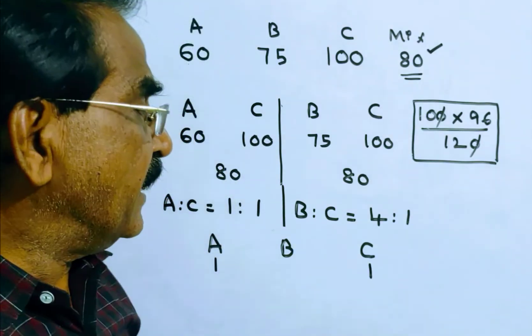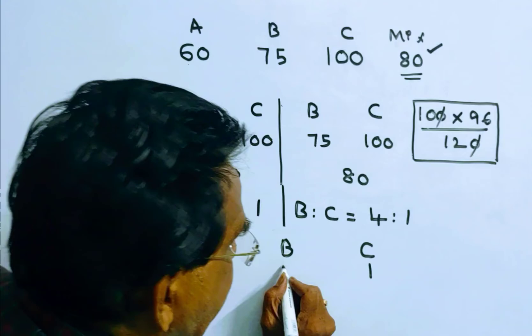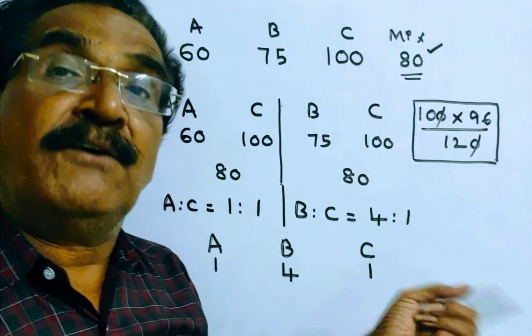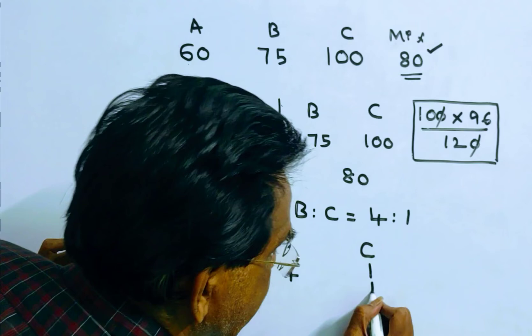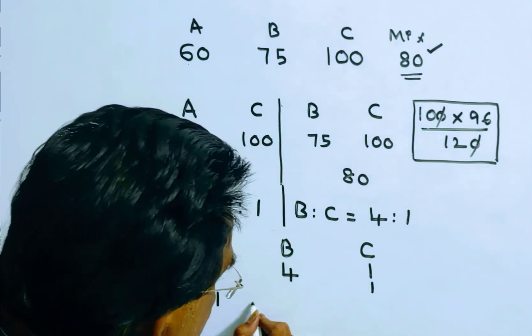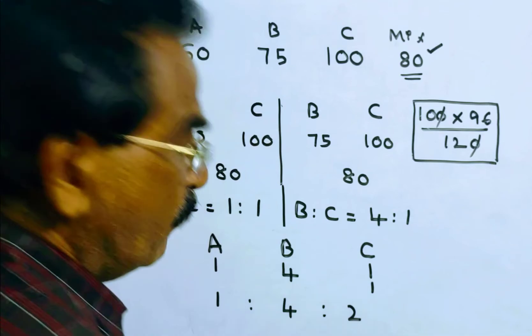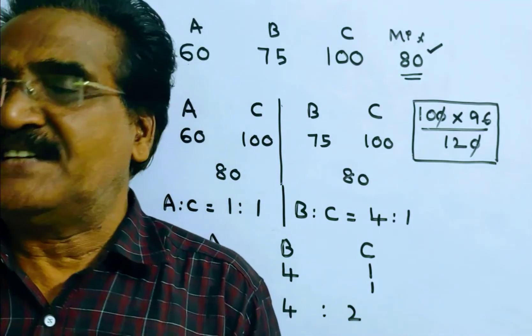Similarly, for every four kg of type B, we have to take one kg of type C. So the final ratio is 1 to 4 to 1 plus 1 equals 2. 1 to 4 to 2. Thank you.